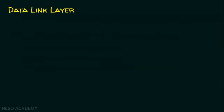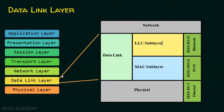In the OSI reference model, the data link layer is layer two. The two sub-layers of the data link layer are the logical link control sub-layer and the MAC sub-layer. On top of the data link layer we have the network layer, and below it we have the physical layer. The data link layer has these two sub-layers: logical link control and MAC.